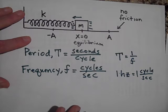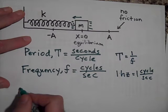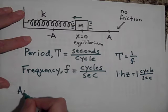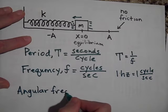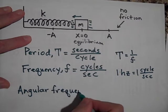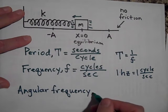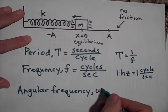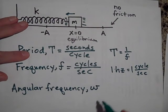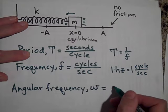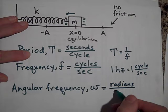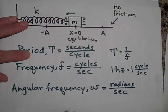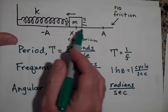All right, there's one more term that we want to know, and that's called the angular frequency. Angular frequency is going to be designated with an omega, and it's going to be how many radians per second. Now you might think, radians, this isn't going in a circle.